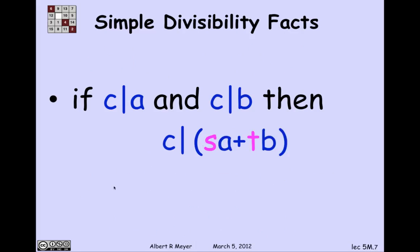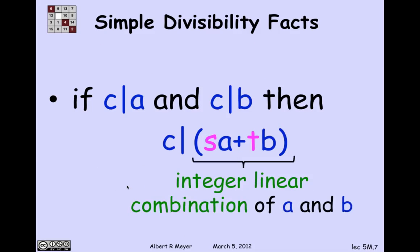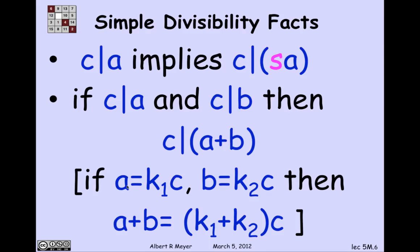What we've got is C divides A means that A is equal to K1 times C. And C divides B means that B is equal to K2 times C. So that means that A plus B is simply K1 plus K2 times C.